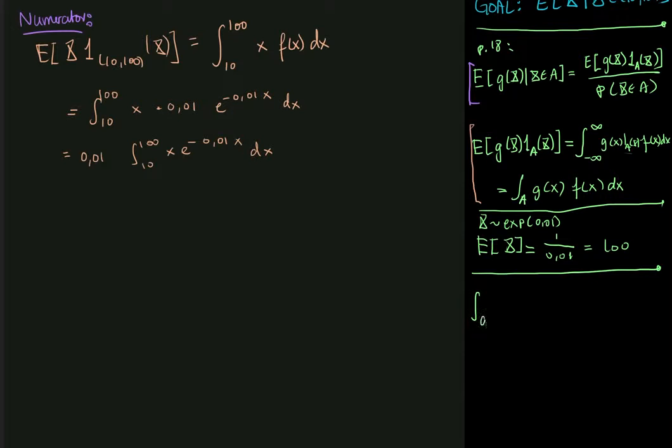So normally what we have is we have some interval from a to b of some function u multiplied by another function v. And the underlying assumption is one of them is already differentiated, the other one is not.